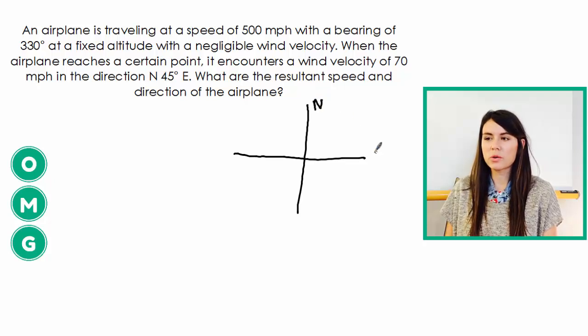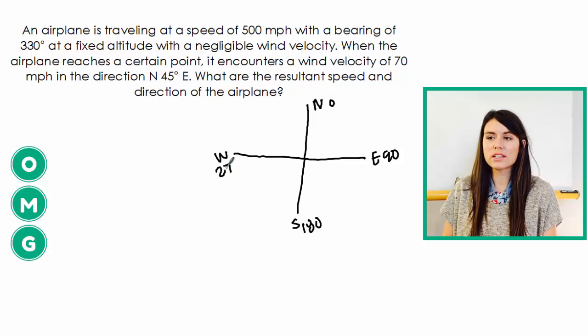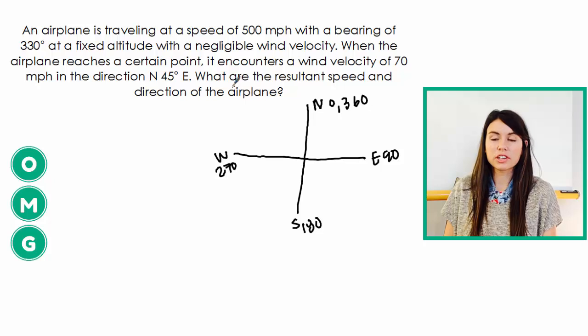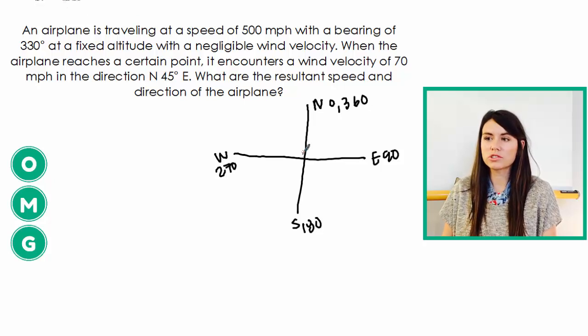So that means we're at north, east, south, west and this is 0 degrees, 90, 180 and 270, and then we end at 360. So if we have a bearing of 330 degrees, that puts us in quadrant two.